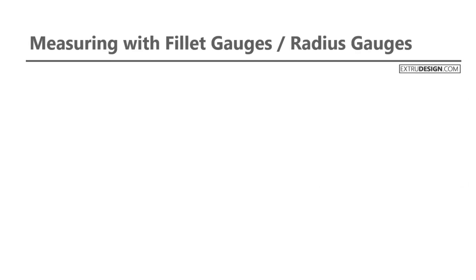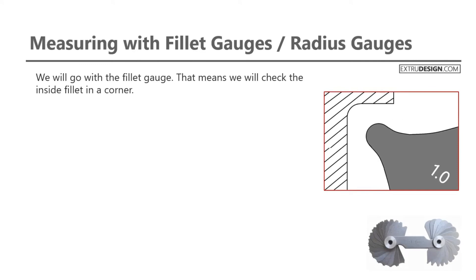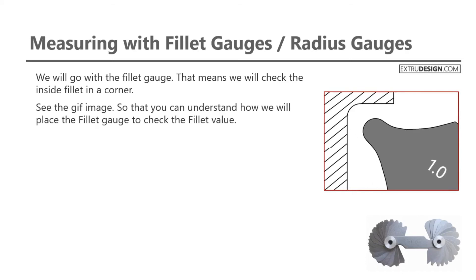Let's see how we can measure with fillet gauges. We will go with the fillet gauge. That means we will check the inside fillet in a corner. See the gif image shown on the right side. So that you can understand how we will place the fillet gauge to check the fillet value.